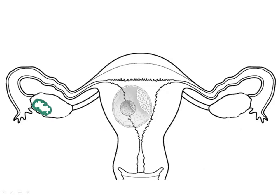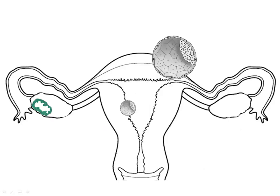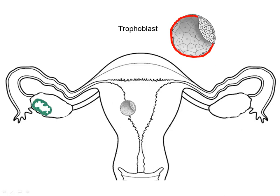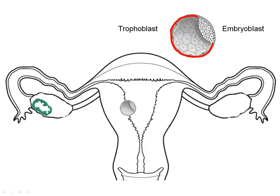The surrounding cells of the blastocyst called the trophoblast will attach to the endometrium and form all the extra-embryonic membranes such as the chorion, placenta, and others that will support the baby during uterine development but not actually become a part of the baby itself.